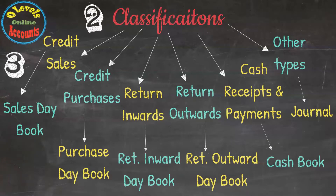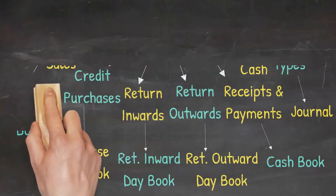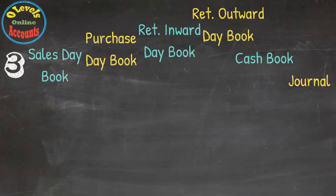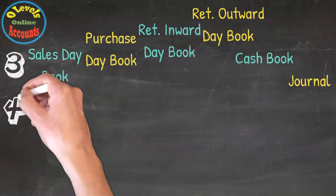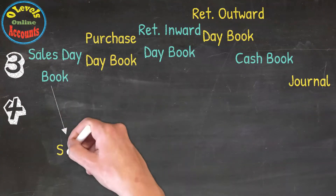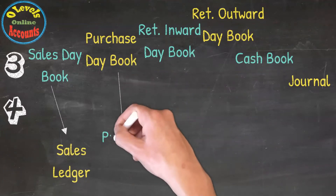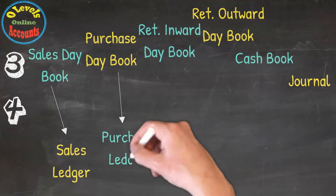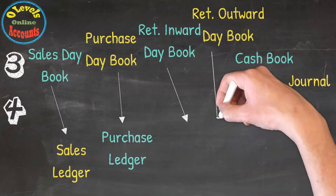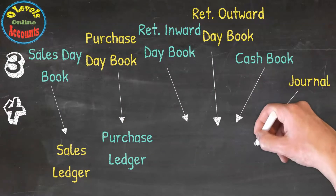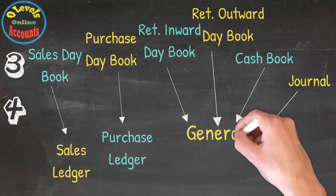In step four, we have Related Ledgers. The Sales Day Book produces the Sales Ledger, the Purchase Day Book produces the Purchase Ledger, and the General Journal produces the General Ledger.